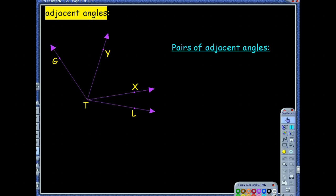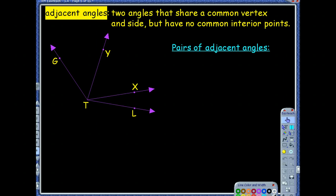Adjacent angles, another vocab. Adjacent angles are basically two angles that share a common vertex and a side.